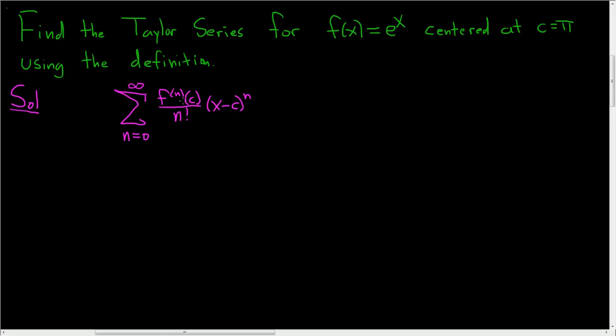In this case, our function is e^x and our c is π. The nth derivative of e^x is just e^x. Pretty easy. Since c is π, we want to evaluate this at c. So the nth derivative at π is just e^π.